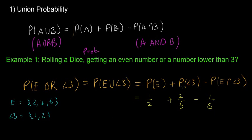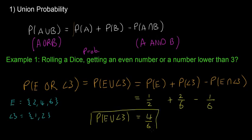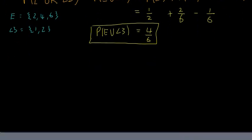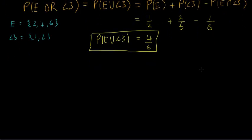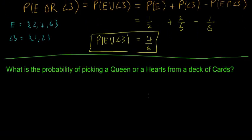It's a simple example — I know you could do this in your head — but it shows you what the formula is for and how to use it. Sticking all that together you get 4/6, so P(even or lower than three) = 4/6. Hopefully that's a good example. I'll show one more example to make it a little bit clearer.